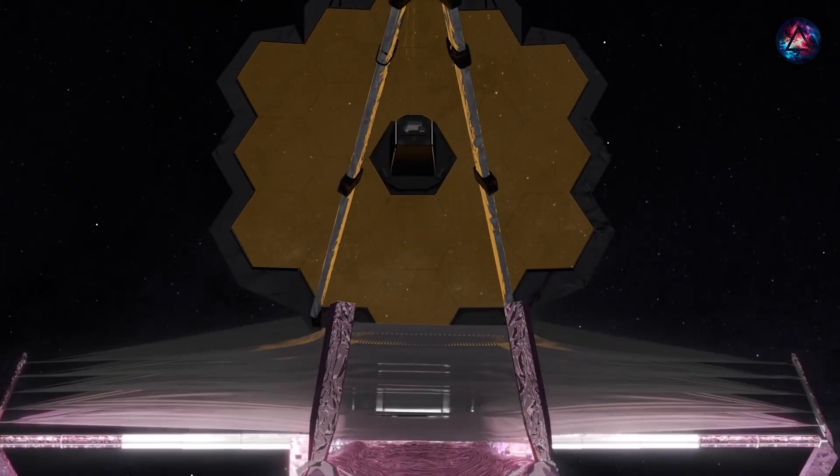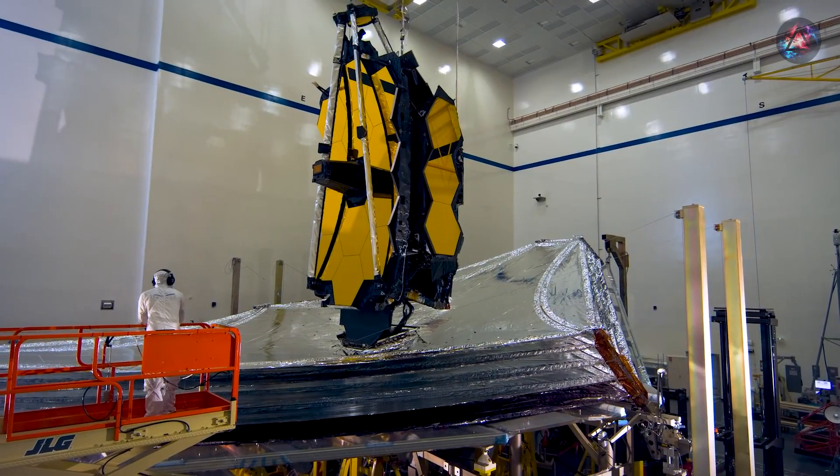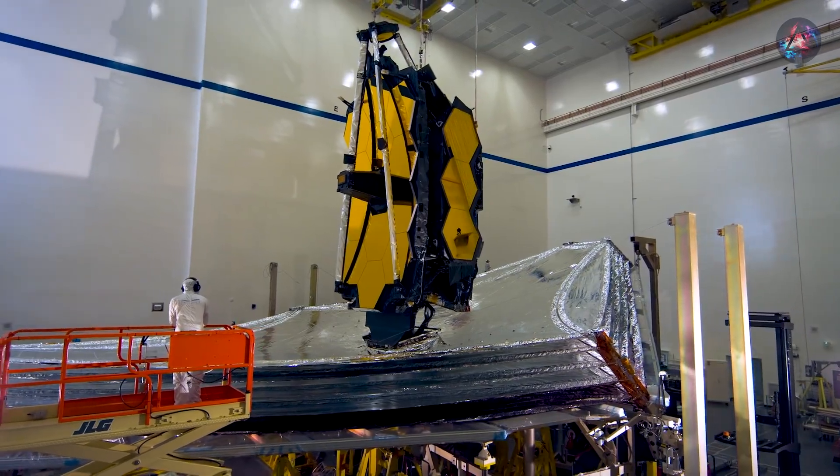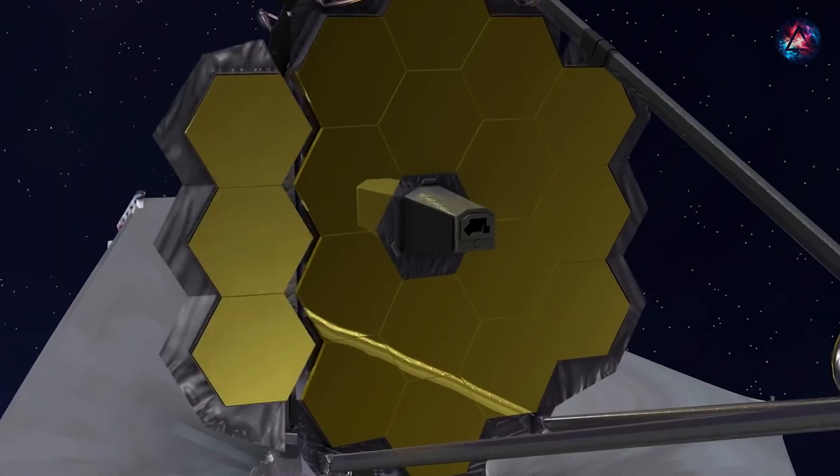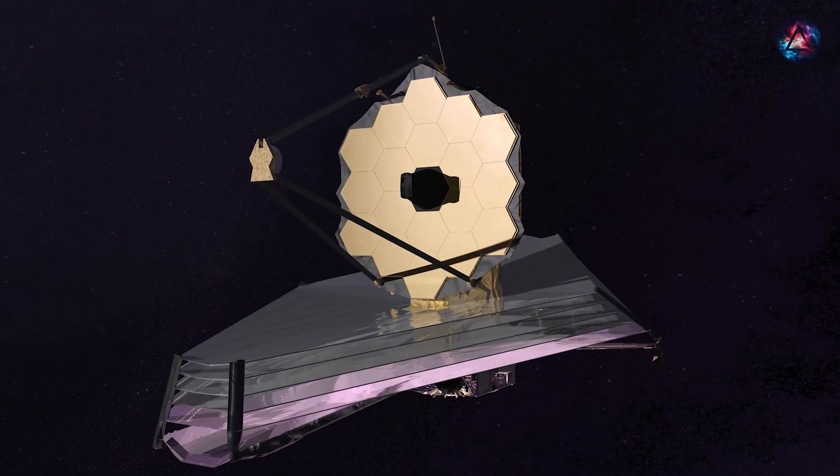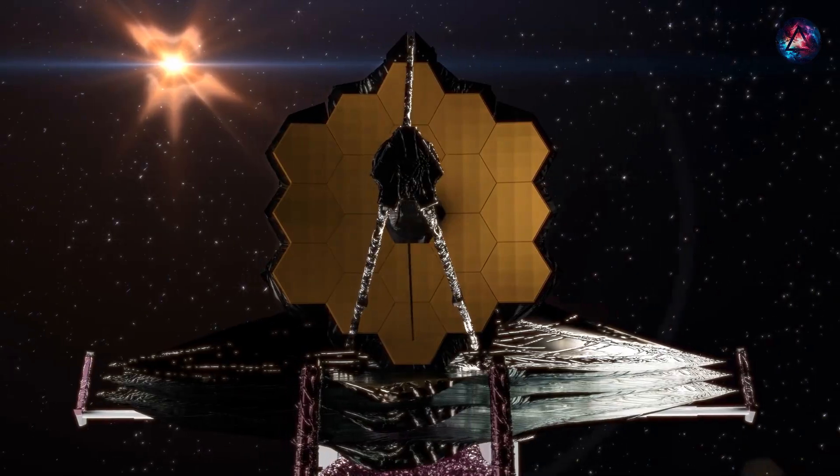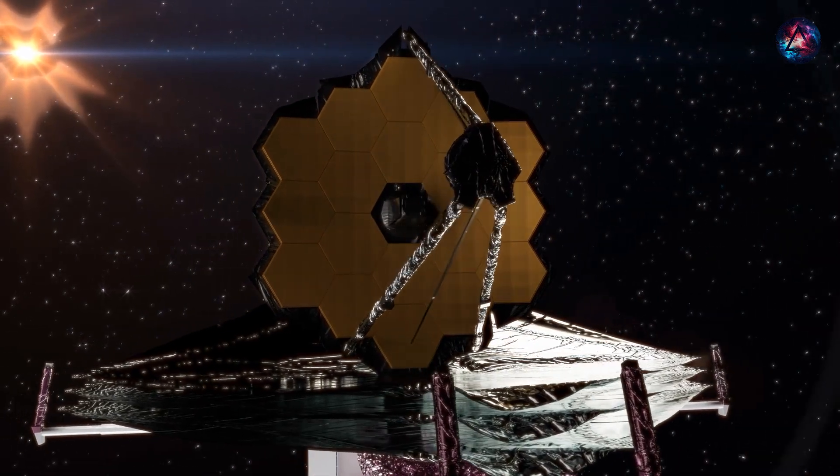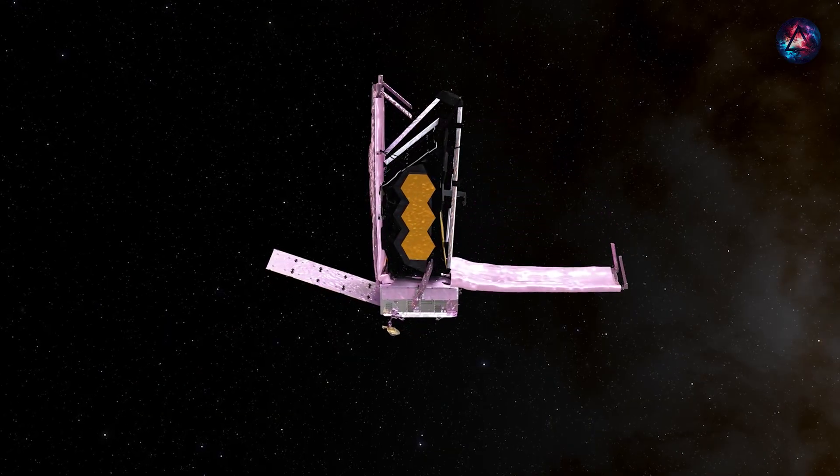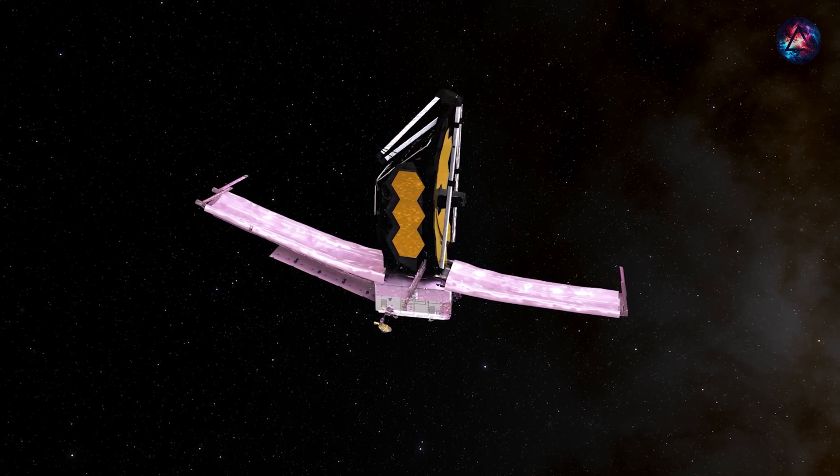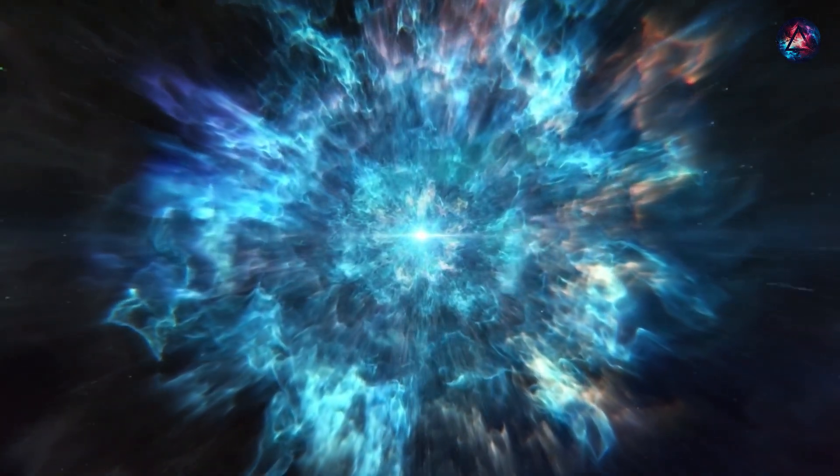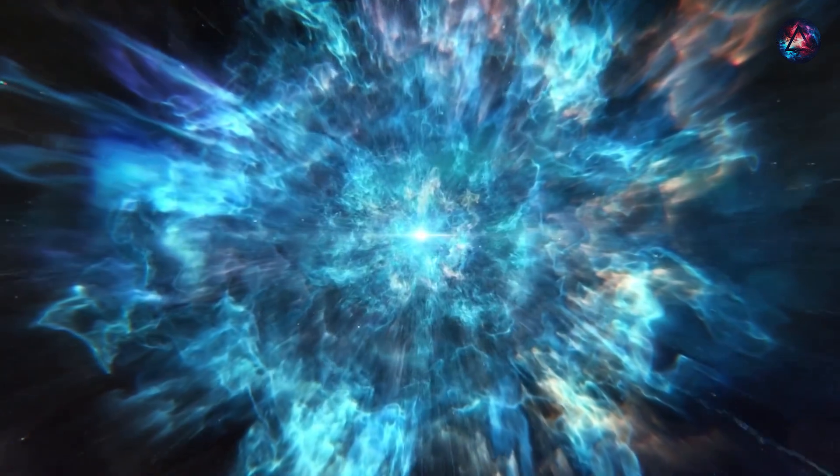Before embarking on its cosmic observations, the JWST underwent critical assessments, such as unfurling its massive sun shield. This shield serves as a protective barrier against the sun's intense heat and light, safeguarding the telescope's delicate instruments. Successfully navigating these tests marked a significant stride in enhancing our capacity to explore and comprehend the vast expanse of the universe.